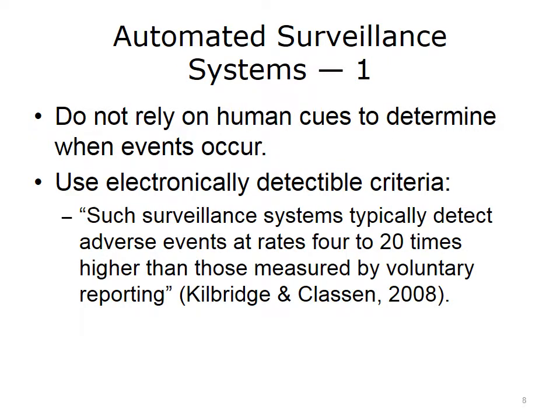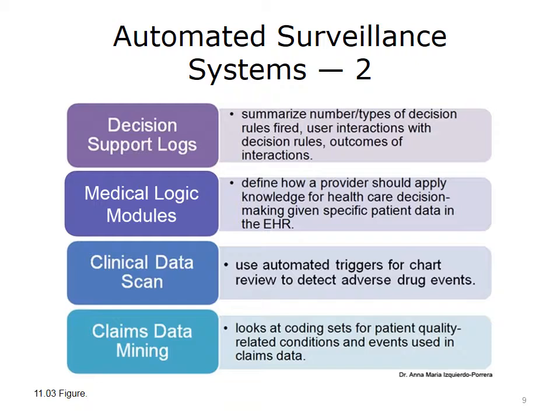Automated surveillance systems use electronically detectable criteria and rules to determine when potential or actual safety events occur. These systems don't rely solely on human cues, which are often missing when clinicians get too busy to detect early warning signs of impending safety events. Decision support logs summarize the numbers and types of decision rules fired, the interactions of the user with the decision rules, and the outcomes of these interactions. For example, if we have a decision rule that warns providers of inappropriate dosing of a drug for particular patient types based on their kidney function, the decision support logs can tell us the number of times this rule fired, as well as the number of times the prescriber either changed or failed to change the drug.